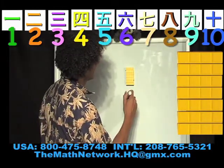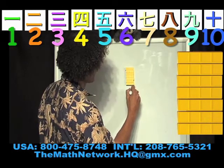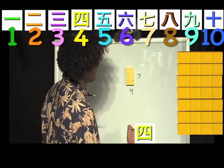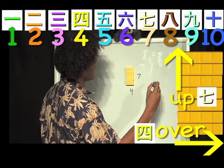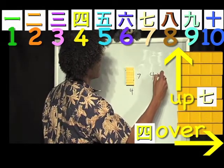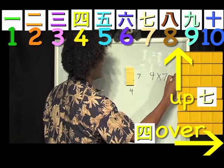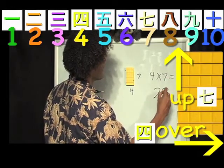And what I have here is four taken seven times. Four taken seven times is the same thing as 28.